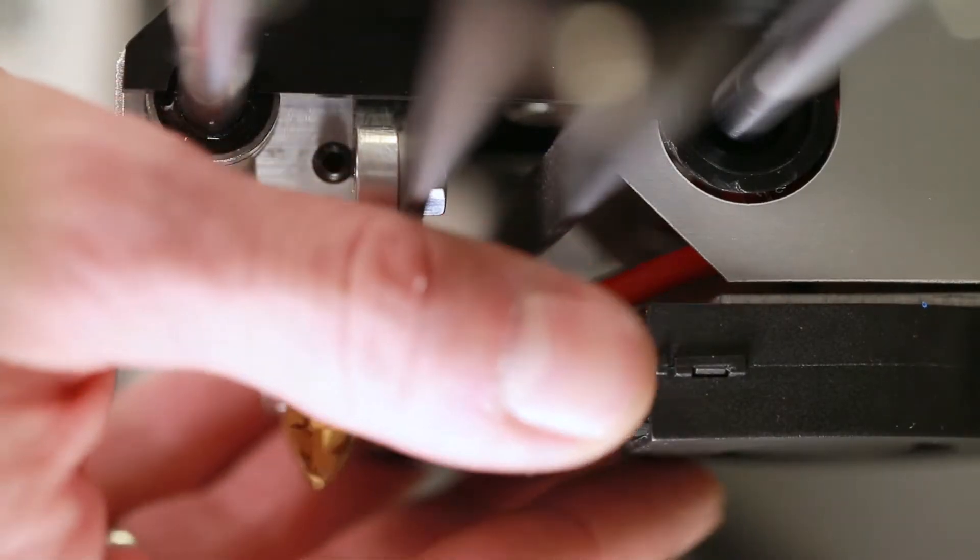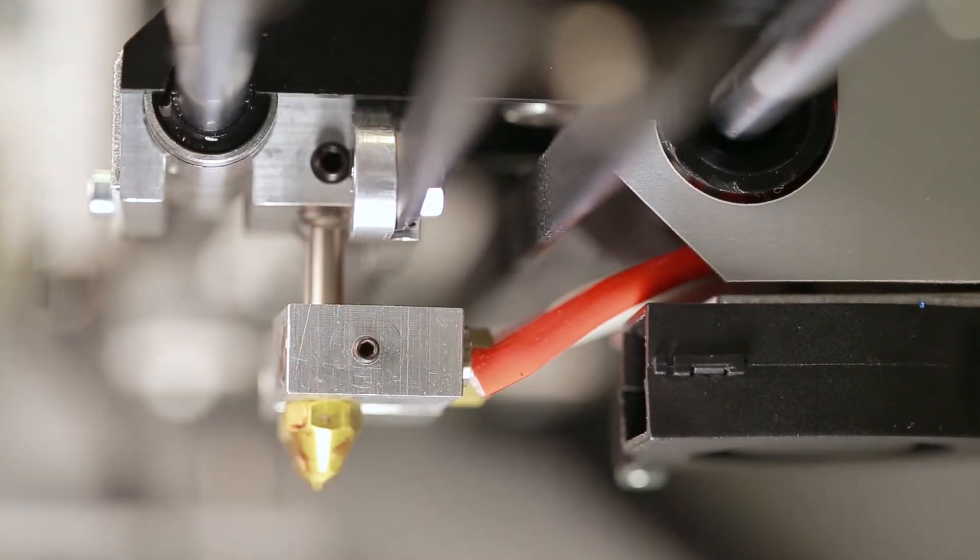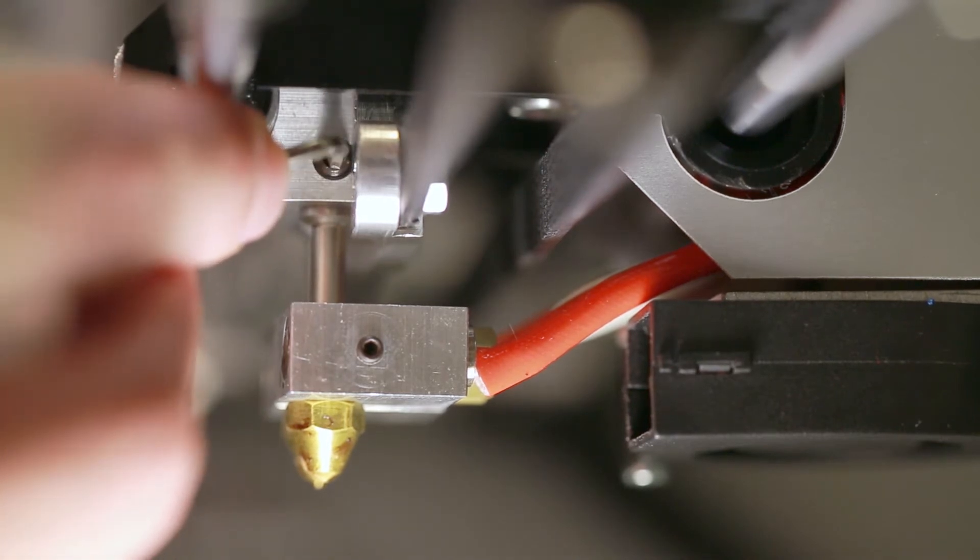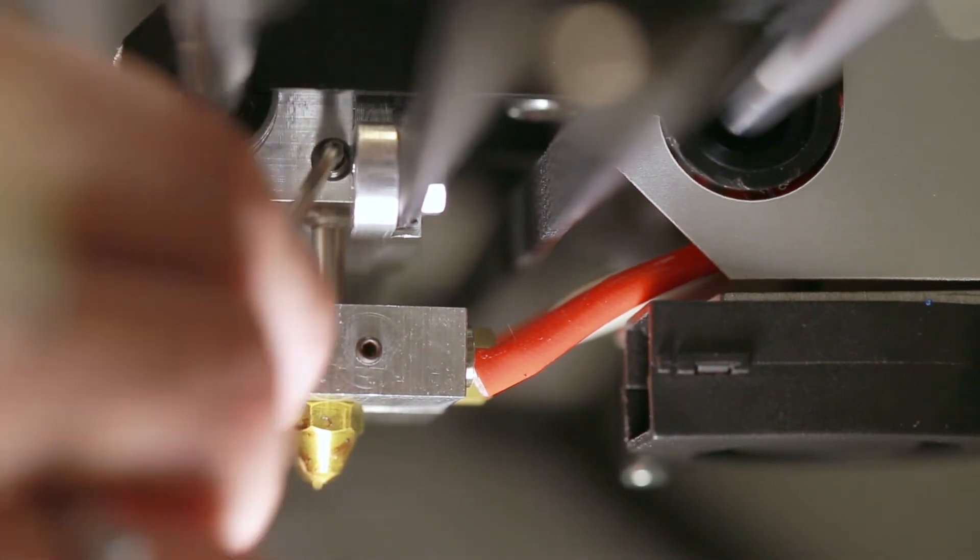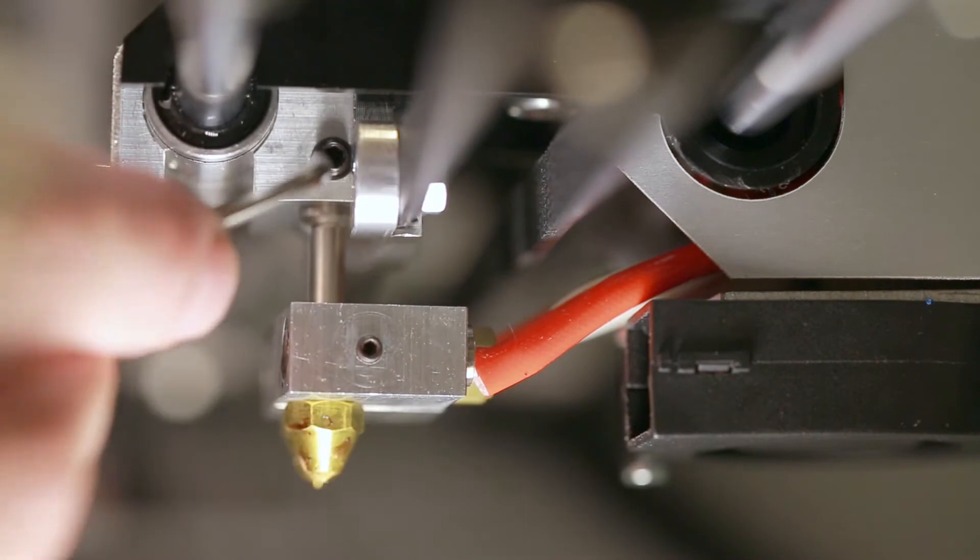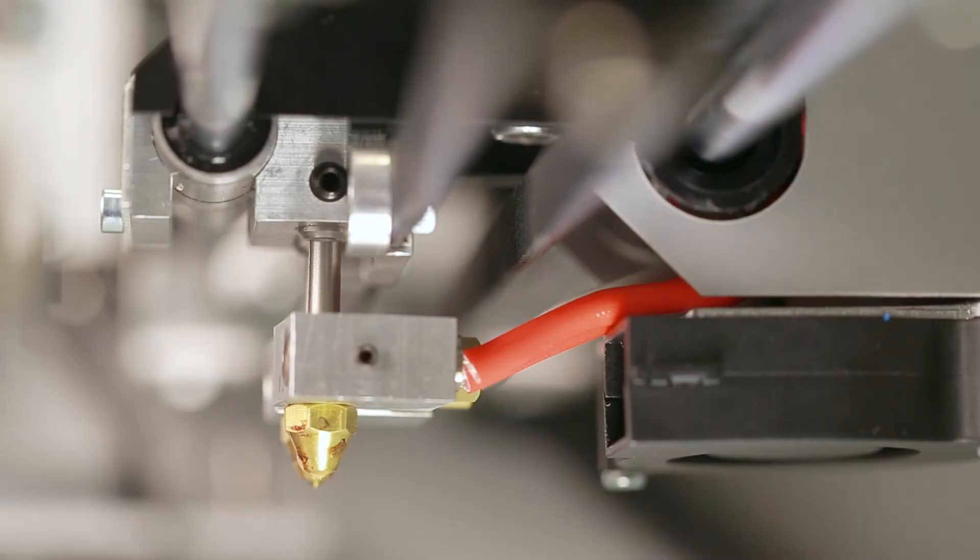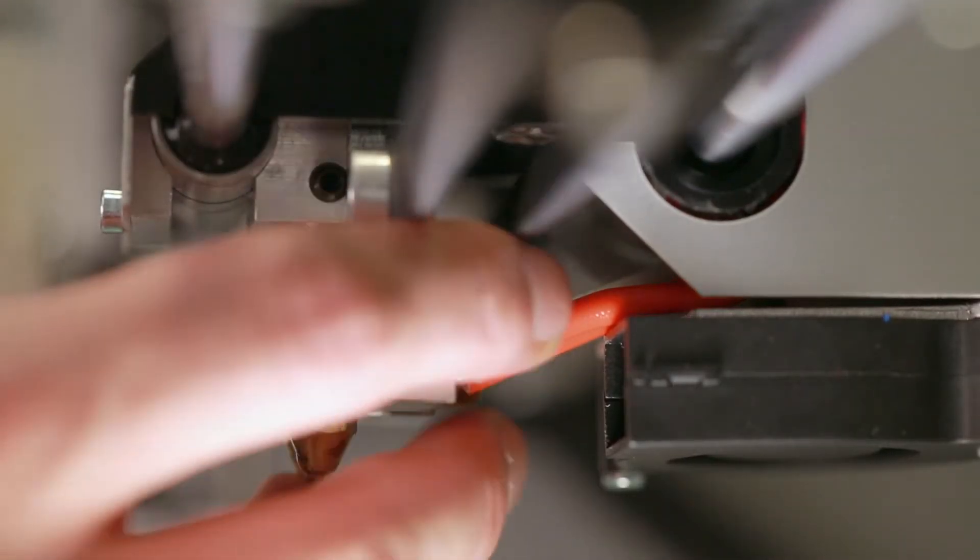To replace the nozzle, we need to first remove the fan duct. Loosen the hotend tube by unscrewing the set screw with an allen wrench, then remove the tube from the printhead.